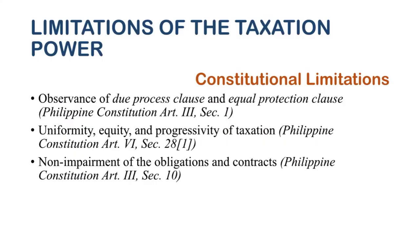The third constitutional limitation is non-impairment of obligations and contracts. This is especially true for contracts already consummated before a tax law was implemented. For example, if our VAT rate is currently 12 percent, and in five years a new law imposes 15 percent VAT, transactions already concluded today would remain subject only to 12 percent. The new tax law cannot be retroactively applied because it would impair those already consummated transactions.